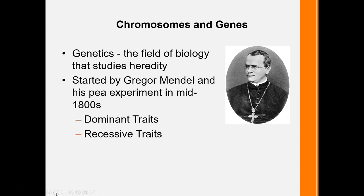If you take a genetic class, they'll talk about Mendelian genetics. We know two individuals with two dominant genes will have a child that exhibits those dominant genes. In order for a child to have a recessive gene, it has to inherit that recessive gene from both parents. For example, if a mother is a carrier for sickle cell anemia, which is a recessive trait, the father also has to be a carrier for the baby to have a chance of carrying it.